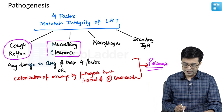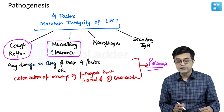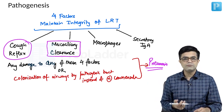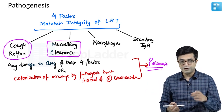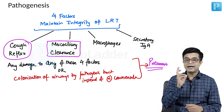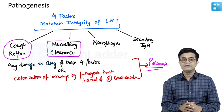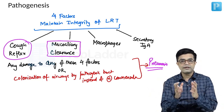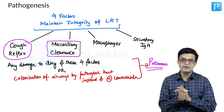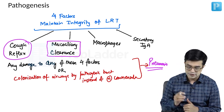Impaired mucociliary clearance — typical examples include ciliopathies and cystic fibrosis, where thickened mucus disturbs mucociliary clearance. In cystic fibrosis, disturbance of the pericellular fluid (PCF) layer causes loss of mucociliary clearance, leading to chronic colonization with Staph aureus and Pseudomonas, which causes recurrent pneumonias.